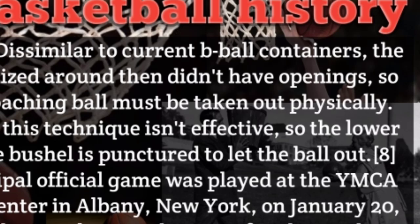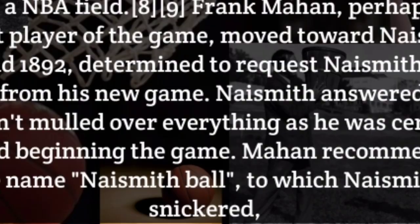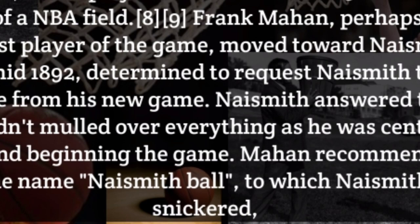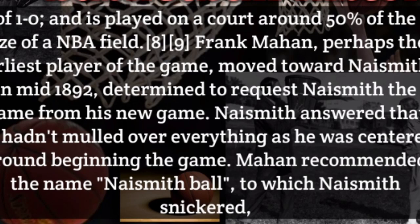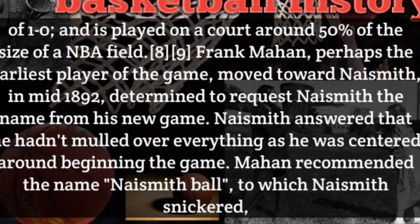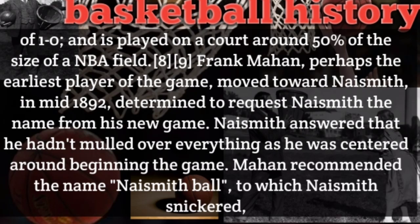Frank Mahon, perhaps one of the earliest players of the game, approached Naismith in early 1892 to ask him the name of his new game. Naismith answered that he hadn't thought about it, as he was focused on getting the game started. Mahon suggested the name 'Naismith Ball,' to which Naismith laughed, saying a name like that would hurt the game. Mahon then said, 'Why not basketball?' Naismith answered, 'We have a basket and a ball — that would be a decent name.'